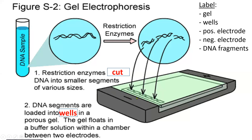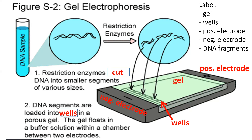Then we turn on the electricity. There's a negatively charged end and a positively charged end on this apparatus. DNA, based on the contents of its molecules and atoms, is slightly negatively charged — that's just its nature. When we turn on electricity, we load DNA on the negative side. Opposites attract and likes repel, so the negatively charged DNA is repelled from the negative electrode and starts moving toward the positive side. If you don't turn the electricity on, the DNA just sits in the well.